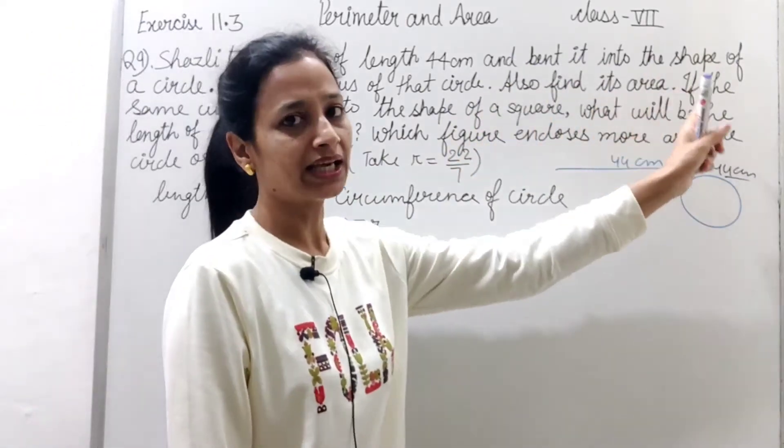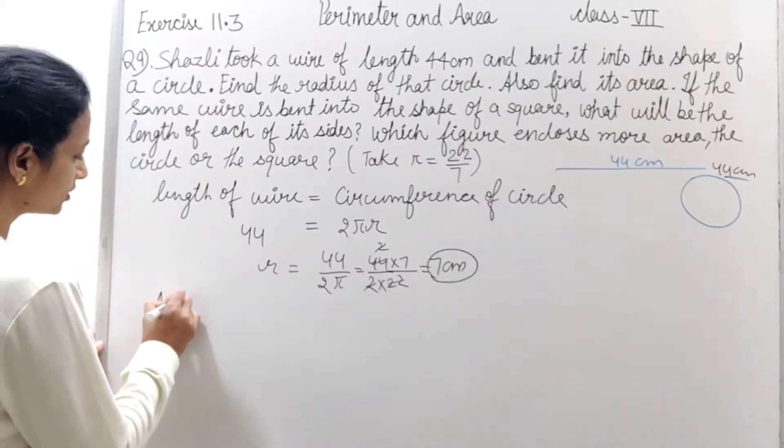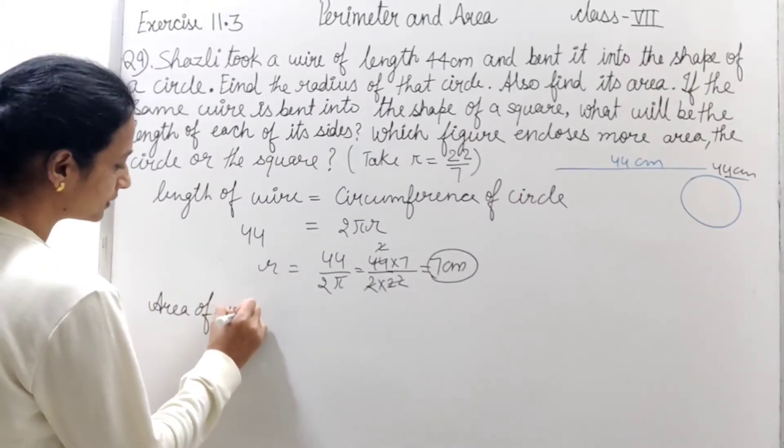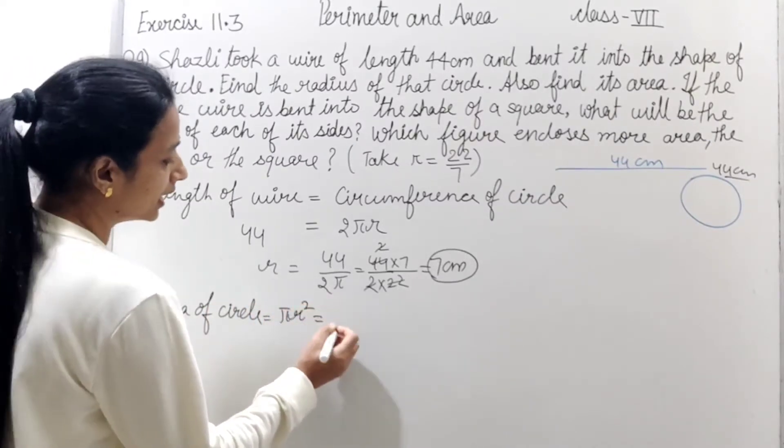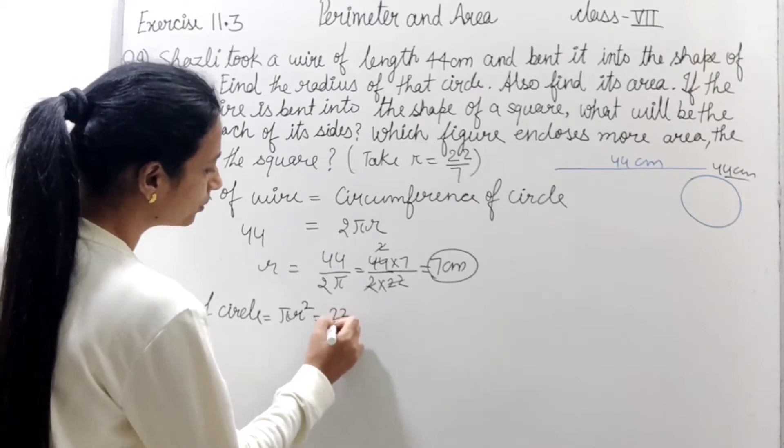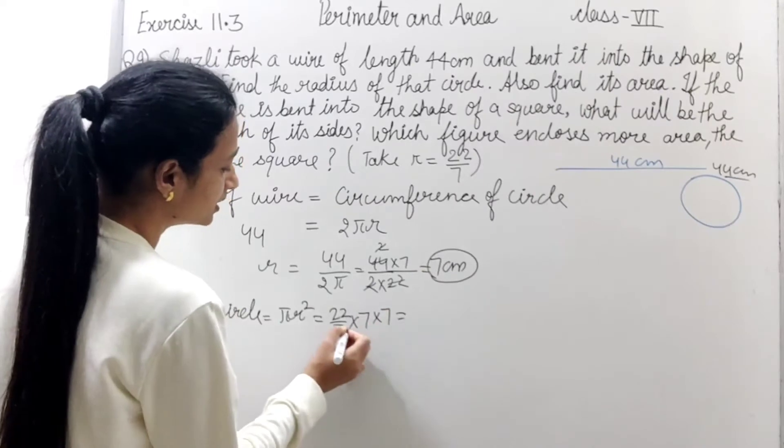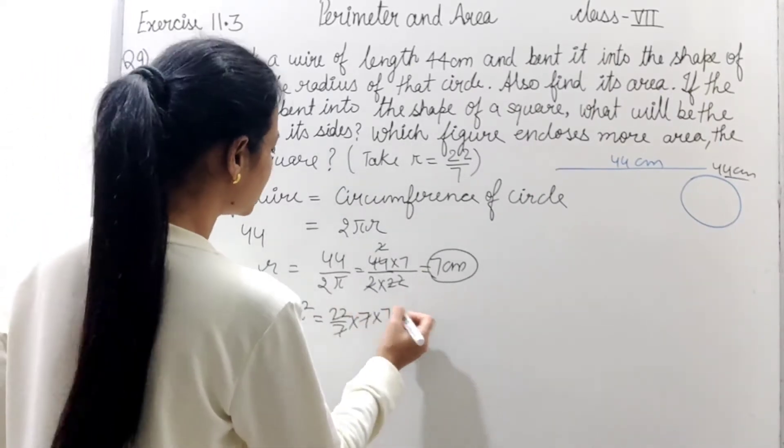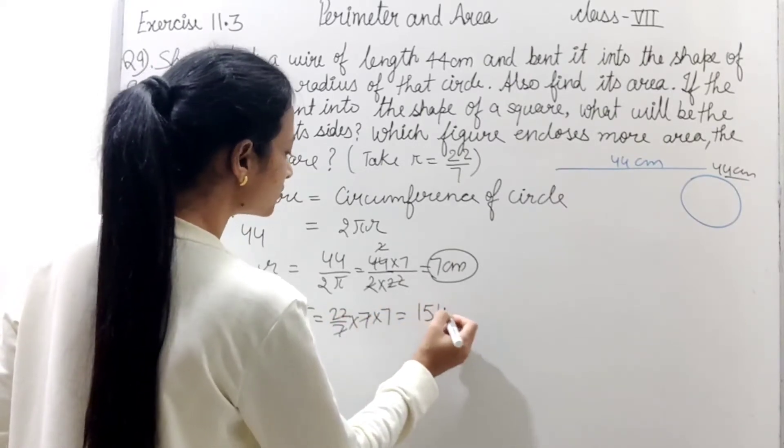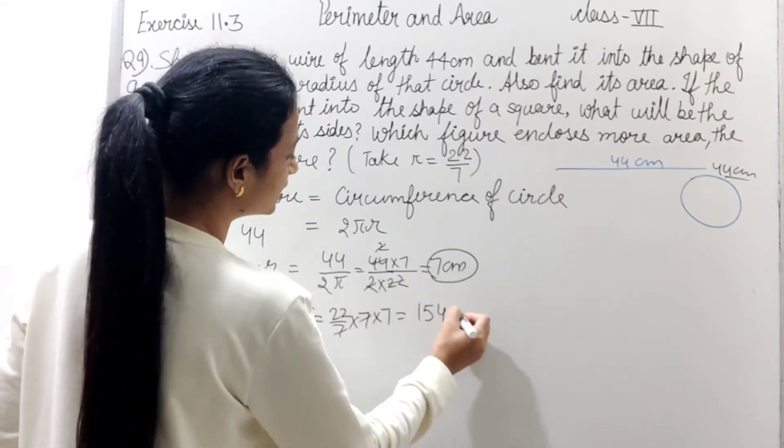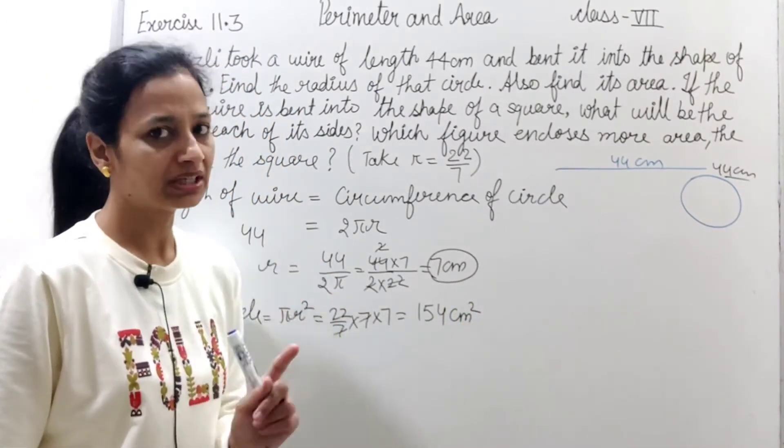Aage chalte hai. Also find its area. To ab jab radius hamare paas hai, to hum area bhi nikaal sakte hai. Area of circle equals to pi r square. Pi ki value hai 22/7 into r is 7 cm. 7 into 7. 7 se 7 cancel. To kitna aajayega? 7 times 14 and 1 is 154 cm square. To area kya aya? 154 square cm.